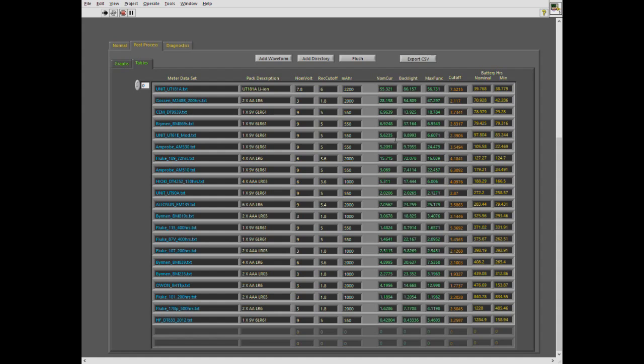Another member on the EEVblog had measured their stock UT61E. They measured a nominal current of 3.2 milliamps. They calculated out to 102 hours with their meter. So still not the greatest, certainly not the worst.